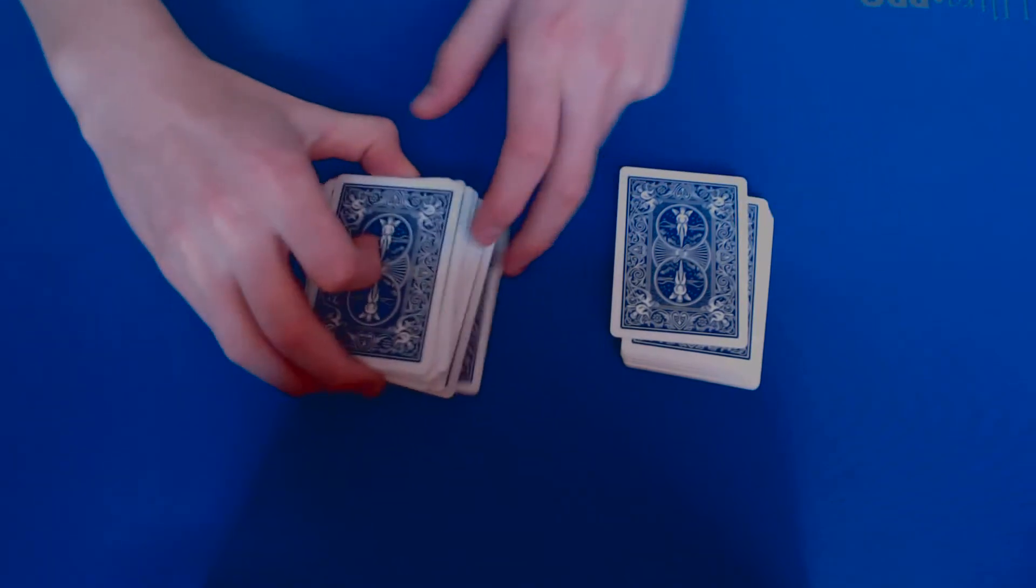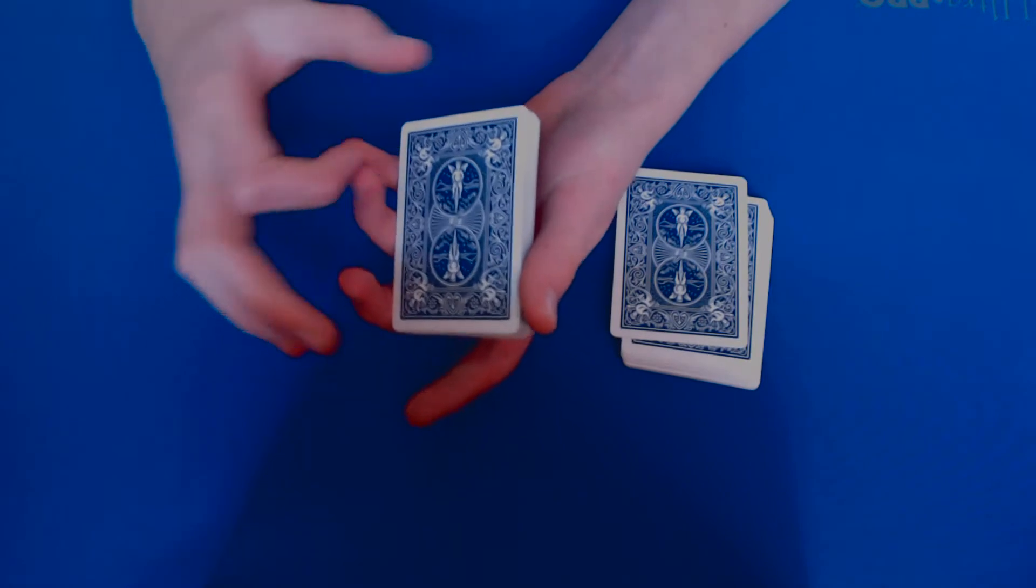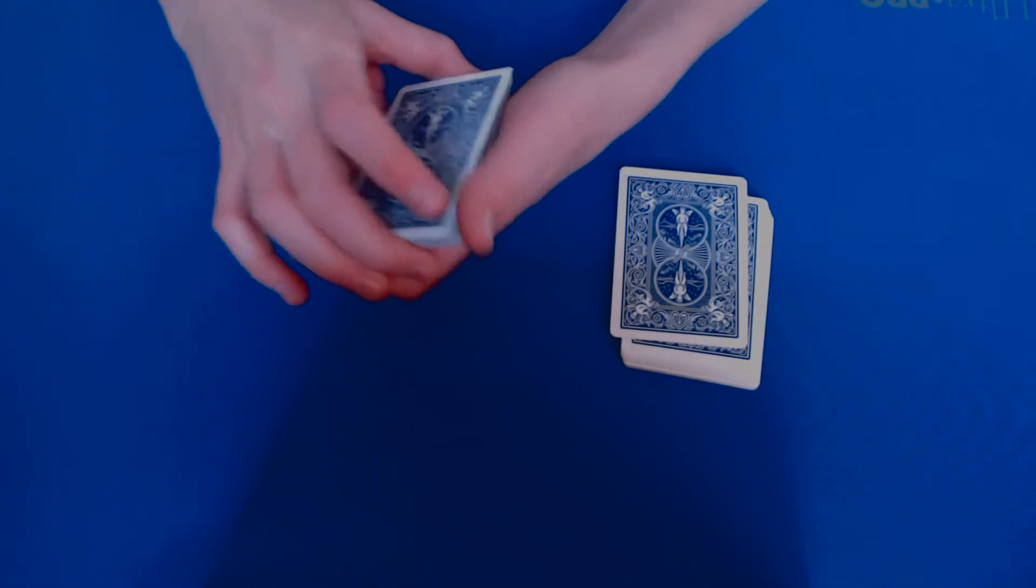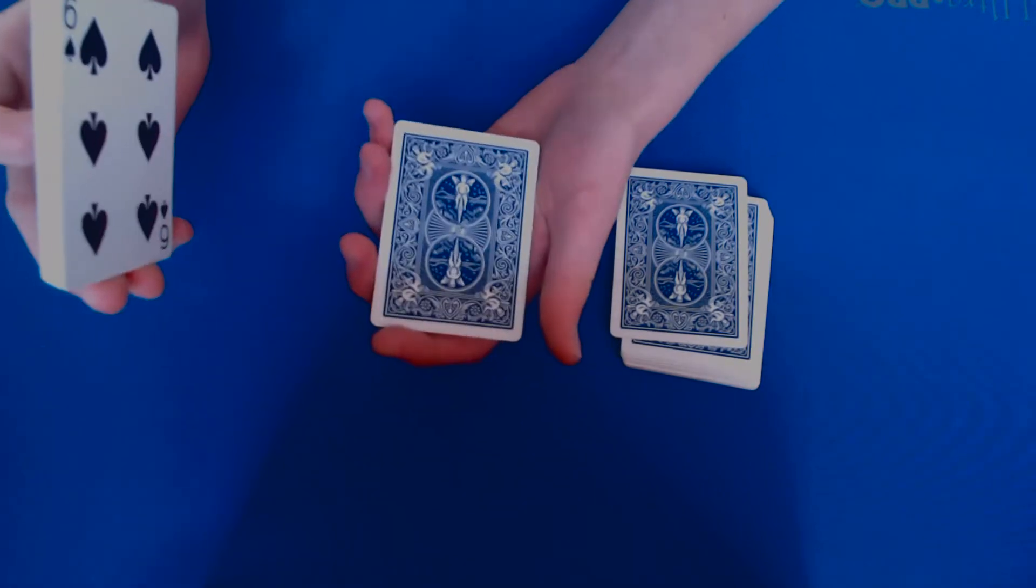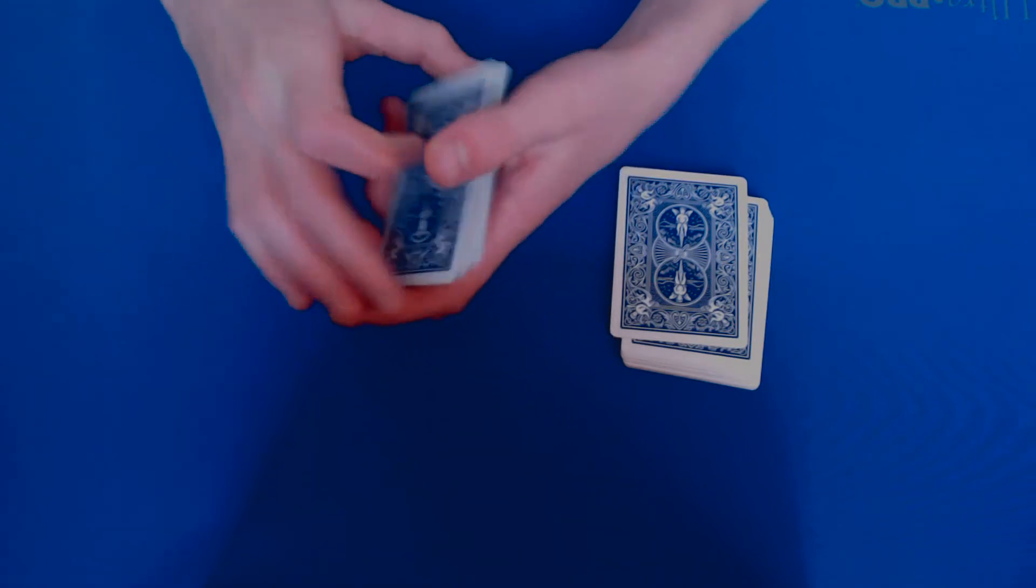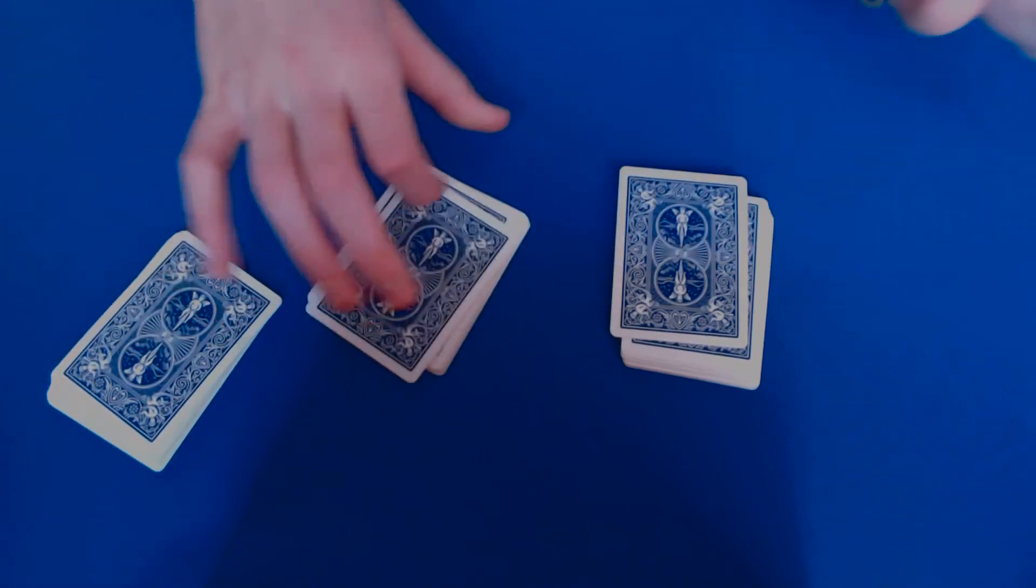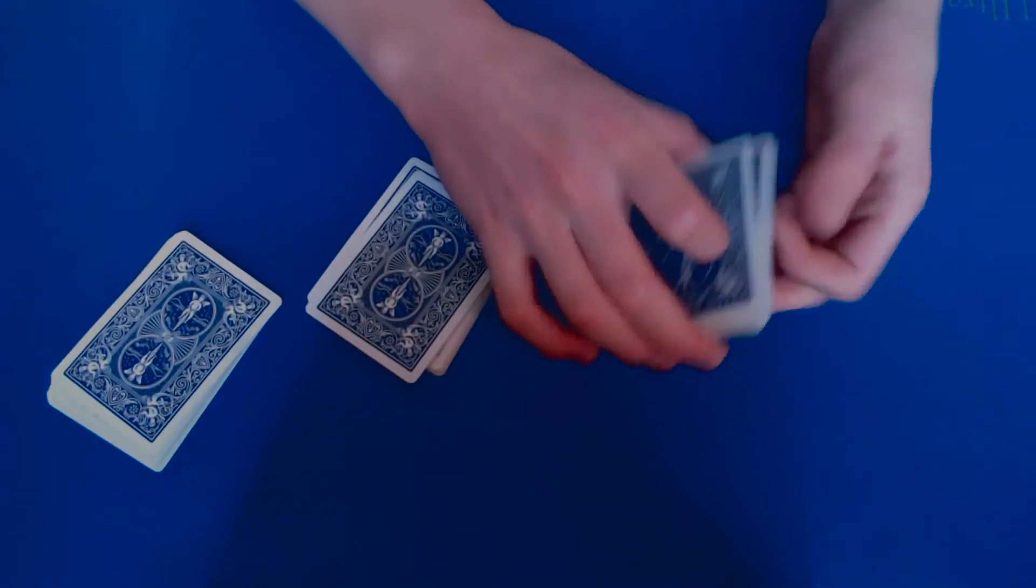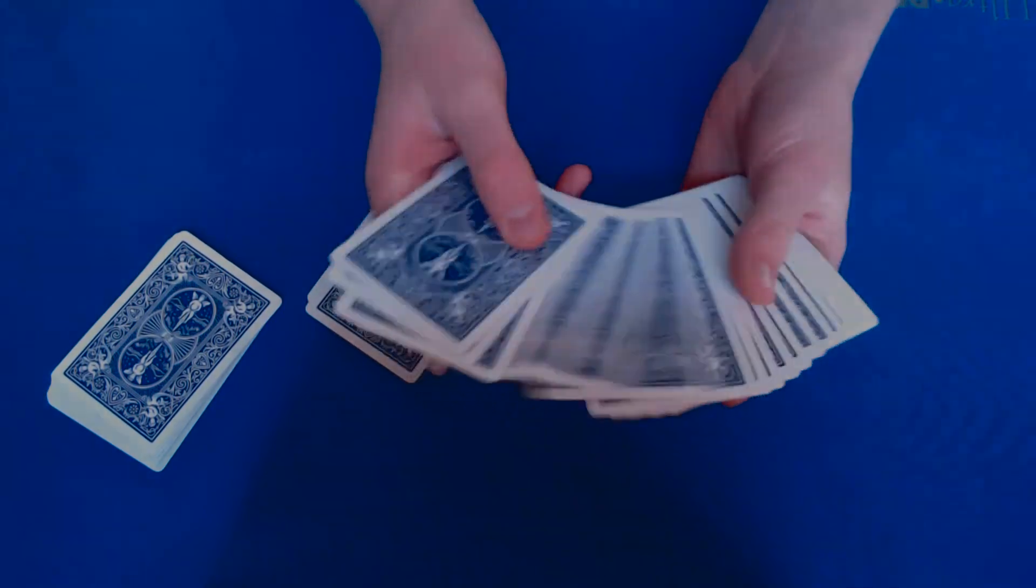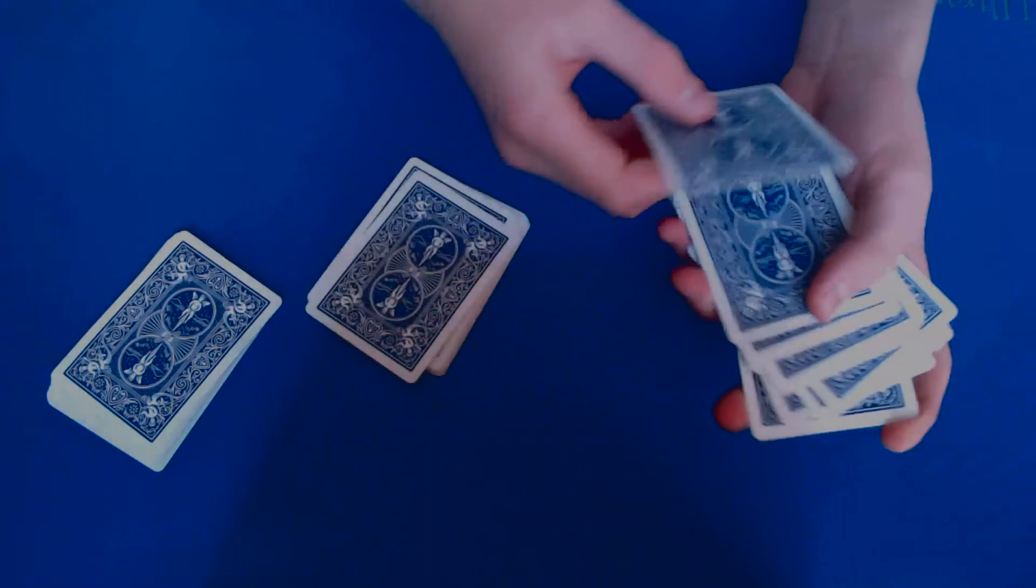And then from the first pile, again, this can work for two spectators. You have the spectator take as much as they want. Some spectators literally want all cards except one, some just want like one or two, but let's just say they took like that much. It works either way, I promise. So, what you want to do, you're going to have them pick a card from this pile and remember it. Let's say they picked this one, three of clubs.